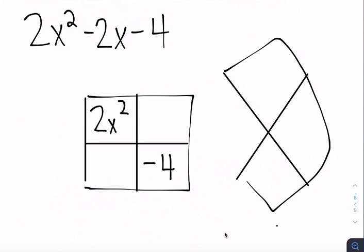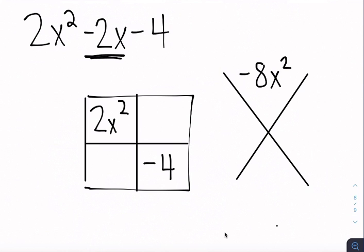You could make yours look more like a diamond. I don't really like to because mine don't ever look very good. So I make a little X and my product, that negative 8x squared that we just talked about, goes up top and then this number right here is the sum of my two X's. So that goes in the bottom and now we just solve like a normal diamond problem.